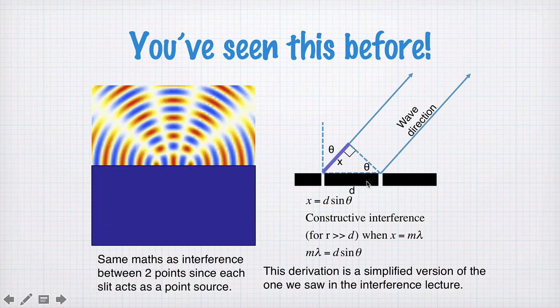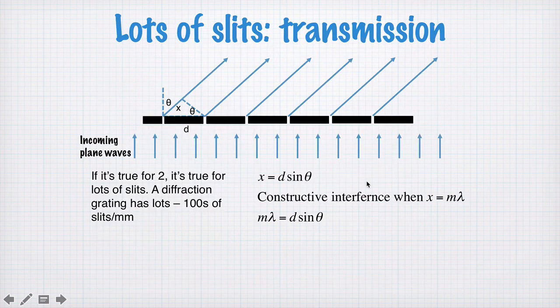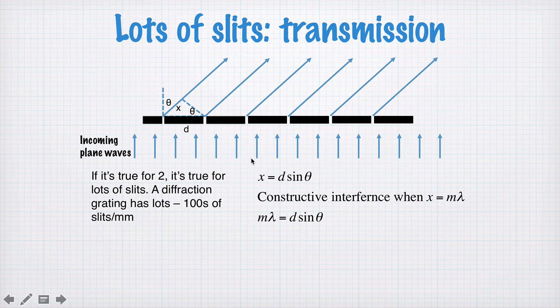Now this works for two slits, it also works for many many slits, hundreds, thousands even, or millions I guess. So here we have lots of slits, we have light coming in, or waves, it doesn't have to be light, any waves coming into these slits, and these slits will behave like point sources.